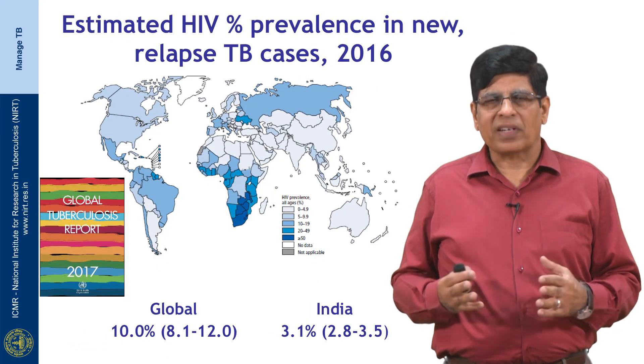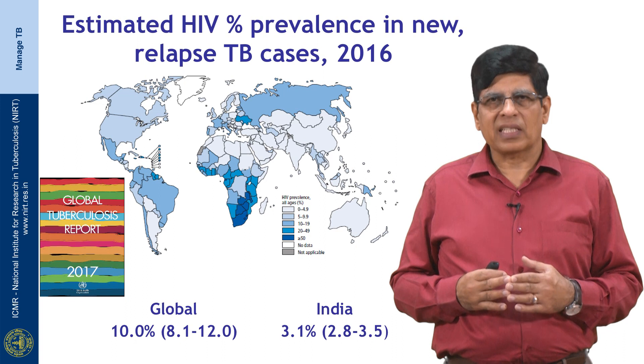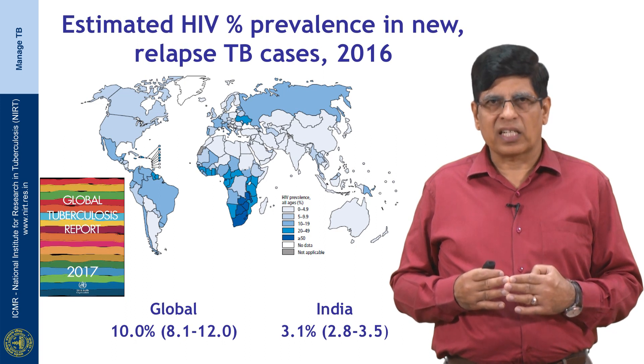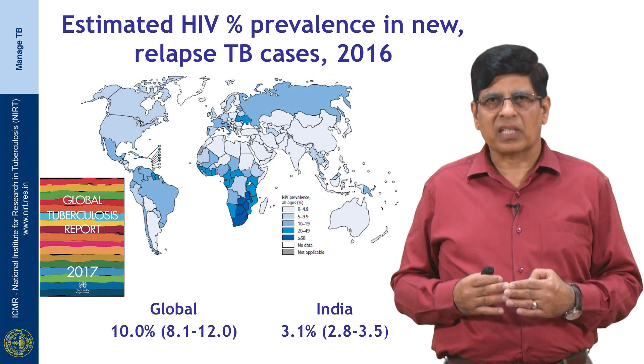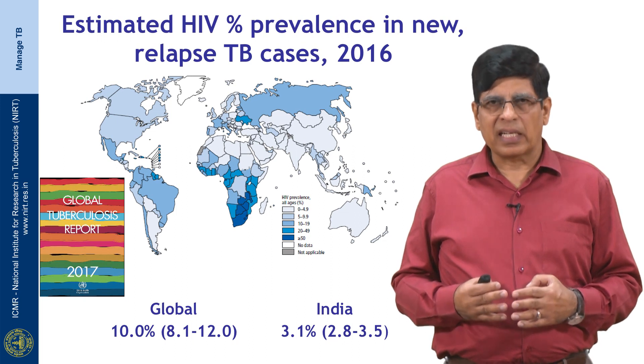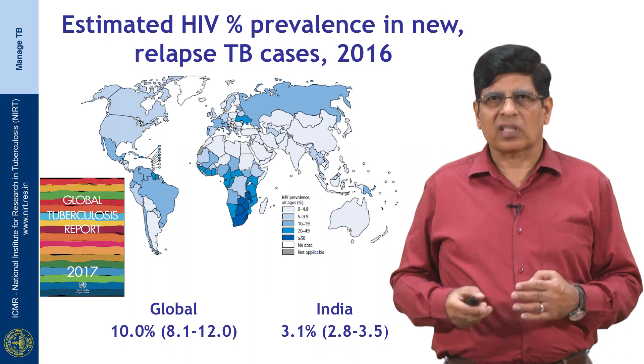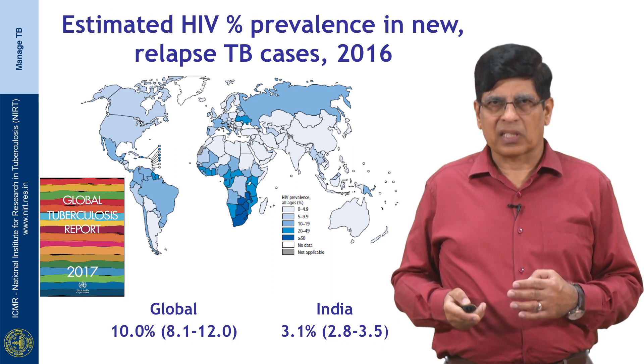The overall prevalence of HIV in incident TB cases was estimated at 10% at the global level, while in India it was 3%.